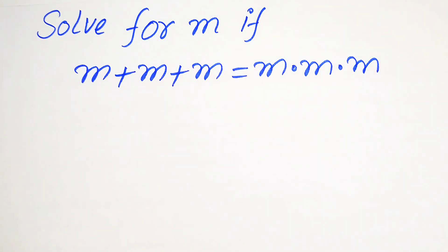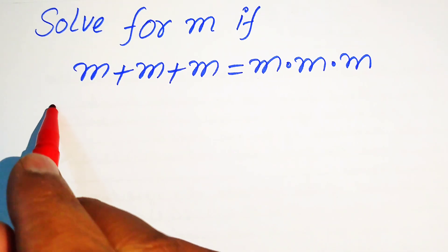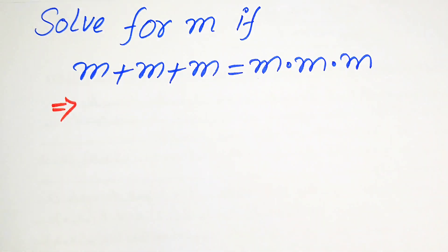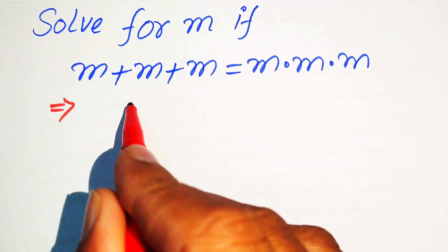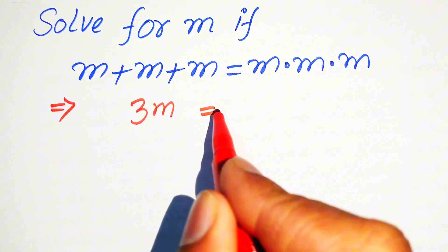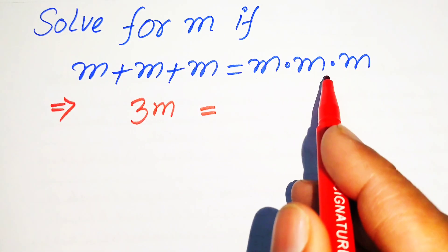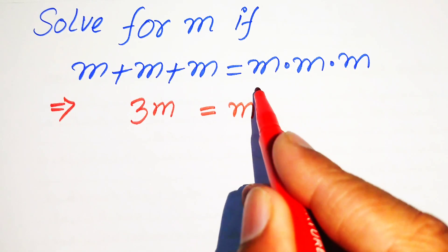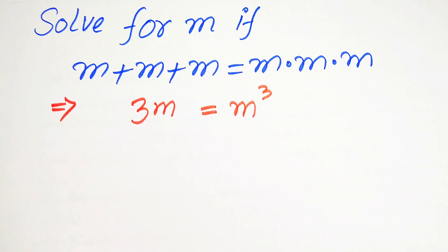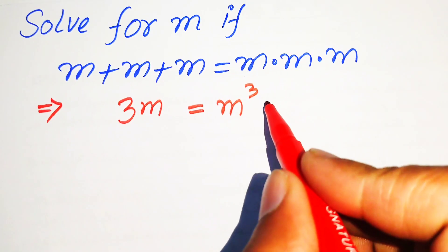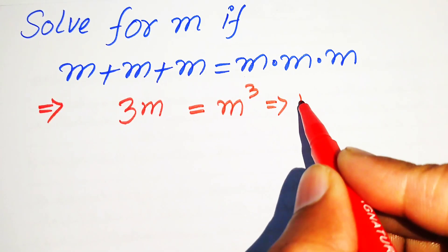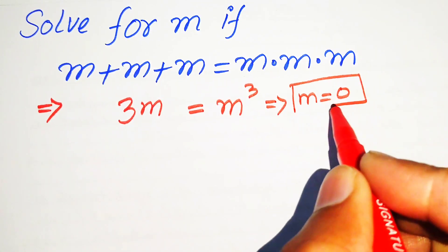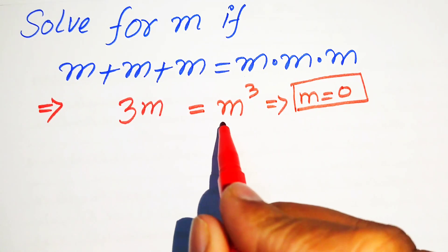If you focus on the left hand side, you see that m is added three times, so we write it as 3m. On the right hand side, m is multiplied three times, so we write it as m cubed. By inspection, you can easily see that the value of m equals zero.